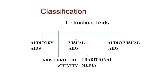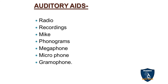Coming to the classification of instructional aids — otherwise called Audio-Visual Aids — which are tools used for instruction or education purposes. Classification includes: Auditory Aids (only hearing), Visual Aids (only seeing), Audio-Visual Aids (both combined), Aids through Activity, and Traditional Media.